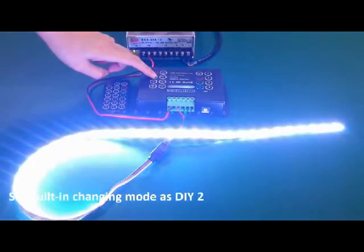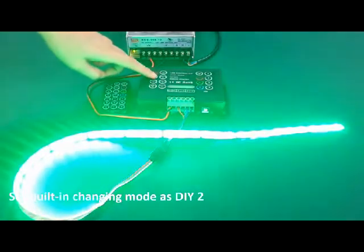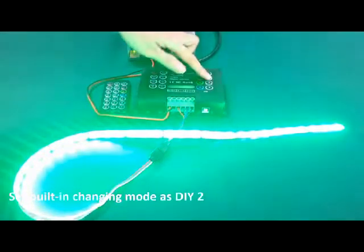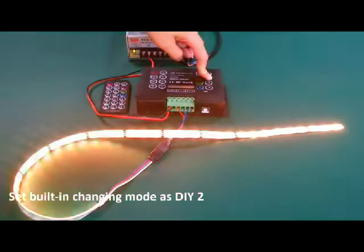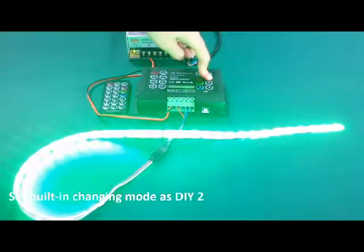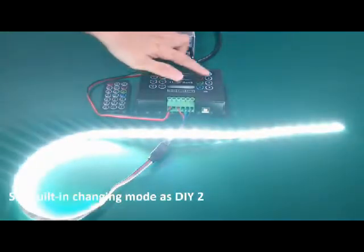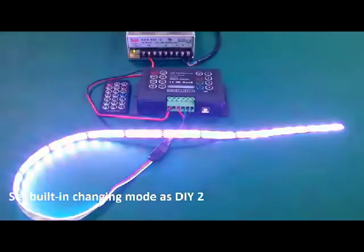We can also save the changing mode in the controller as DIY mode. Long press 2. Saved. Now we press 1, set the color, and press 2 for color changing.